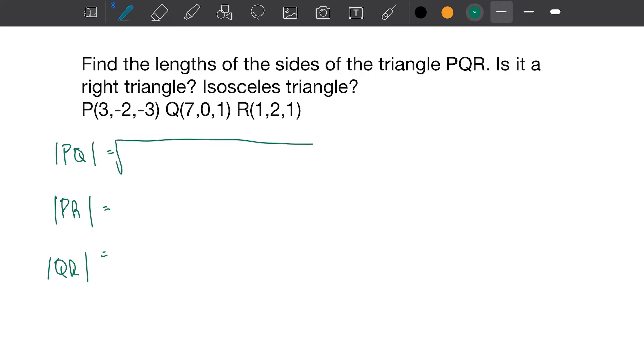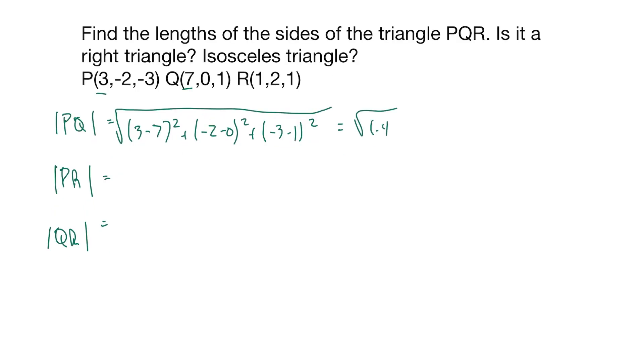And these equal the square root of the X minus the X. So 3 minus 7, that's squared, plus the Y's: negative 2 minus 0 squared. And then it's plus the Z's: negative 3 minus 1.